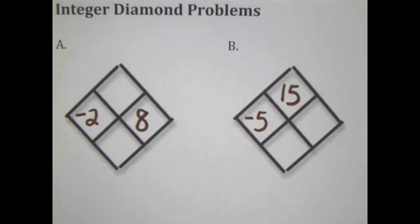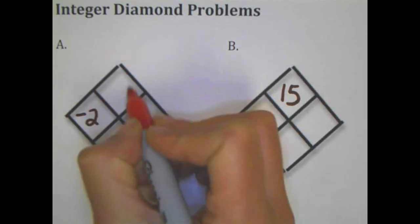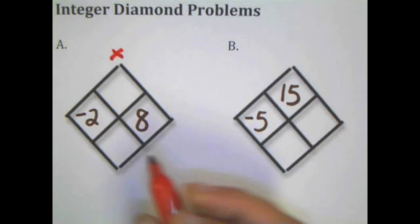This video is on how to do integer diamond problems. It's a great way to practice integers, but once you get into algebra and learn how to factor quadratic equations, this is a really helpful tool. The top box is the product, or the answer to a multiplication problem, and the bottom is the sum, or the answer to the addition of these two numbers.